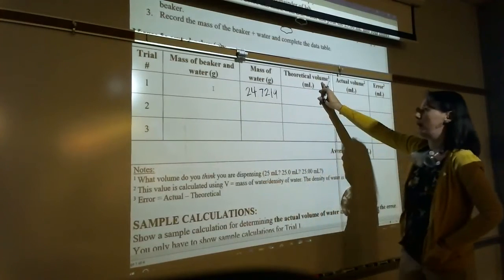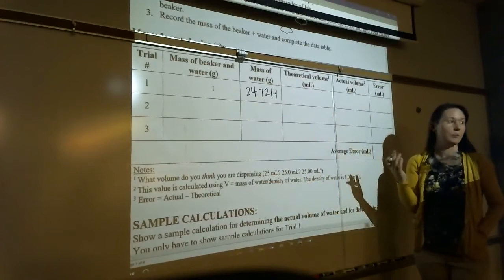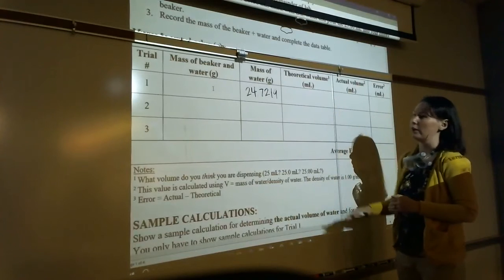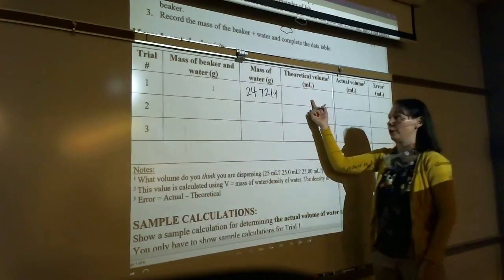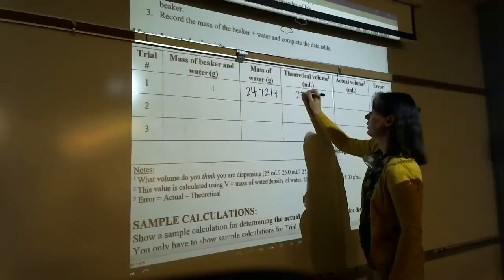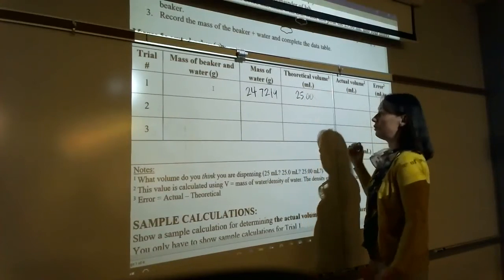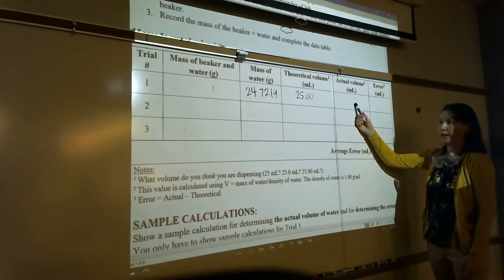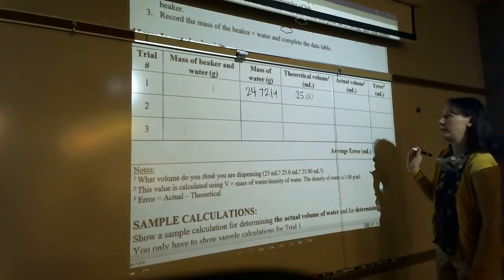Now the theoretical volume is the volume that you think you're dispensing, right? If you use the burette and you filled it up to 25.00 and you drained it all the way down, what volume do you think you're dispensing? You think you're dispensing 25.00, right? That's what you think you're dispensing.